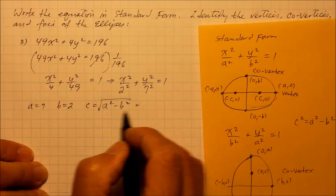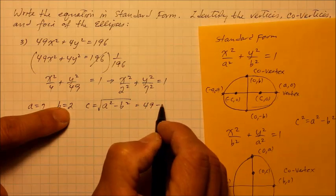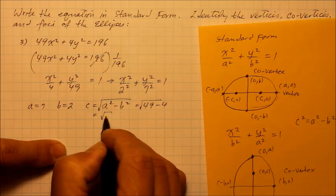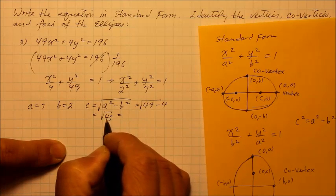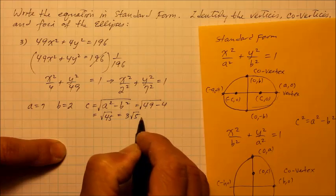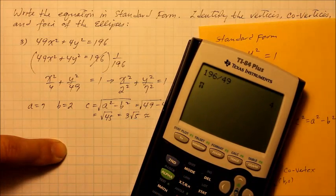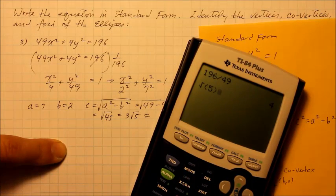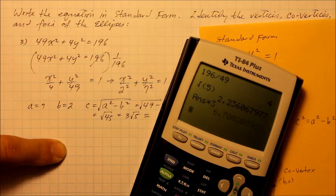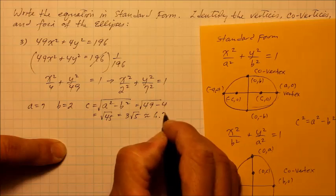And so if I substitute in numbers, remember the a is now the 7, so that's 49 minus 4. 49 minus 4 is of course square root of 45, and that simplifies to become 5 times 9. 9 comes out as a 3 square root of 5. And 3 times the square root of 5, I could use a calculator. Let's see, square root of 5, that's about 2.24 times the coefficient 3, that's approximately 6.7.